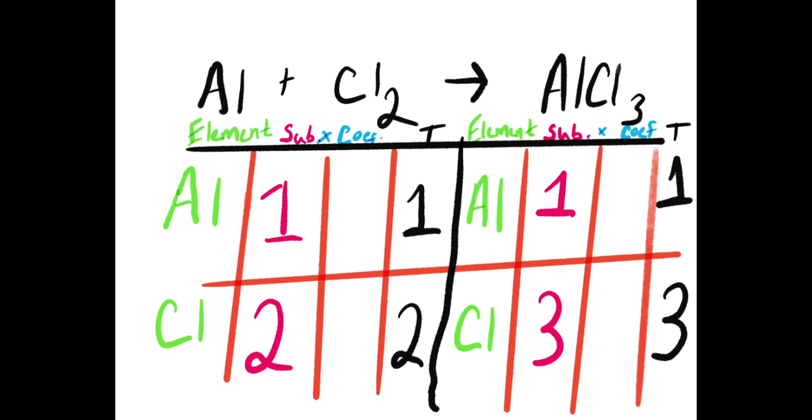I look at each side of the reaction and realize in order for these elements to equal one another, they're going to have to have a total of 6 on each side. In order to do this, I must first add a coefficient of 3 to my reactant side and a coefficient of 2 to my product side. After doing this, I multiply them together and I get 6 chlorine atoms on each side.